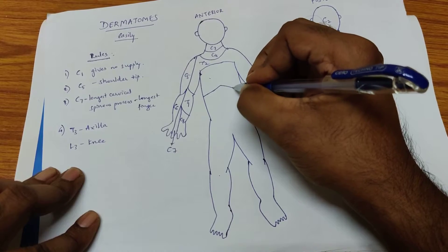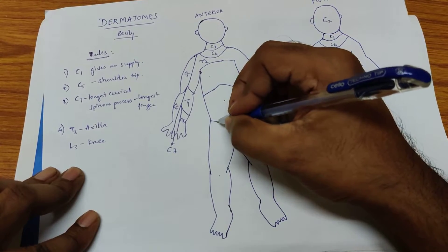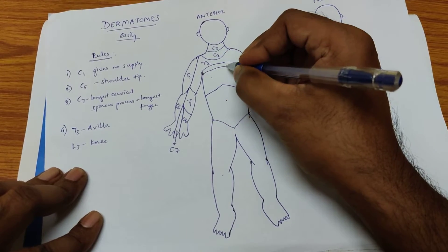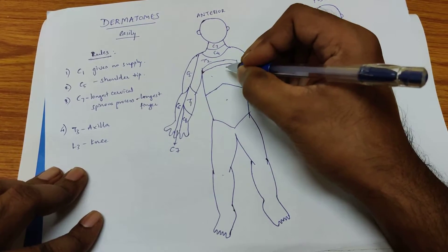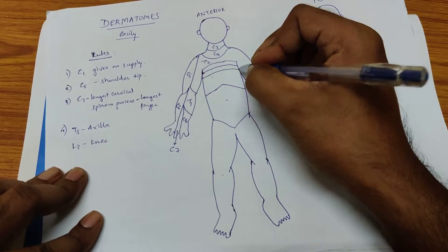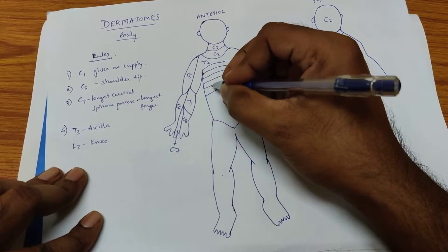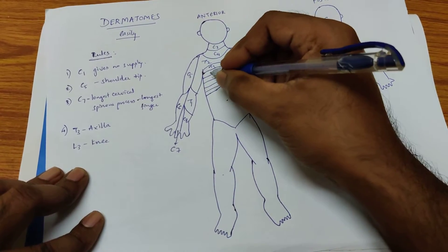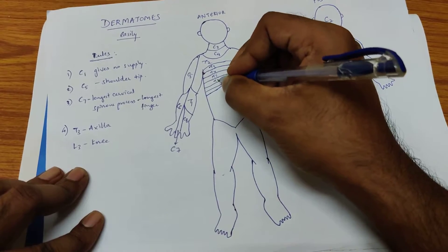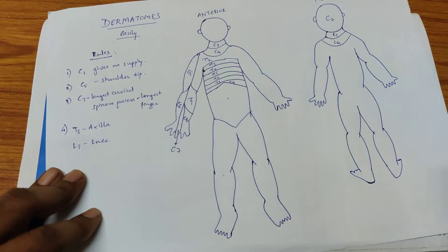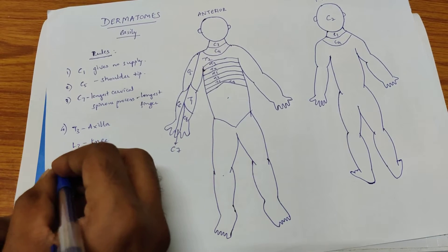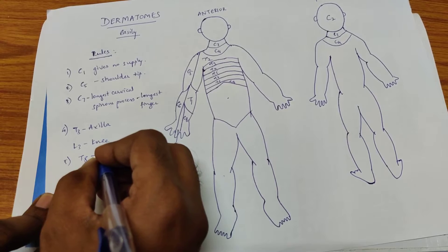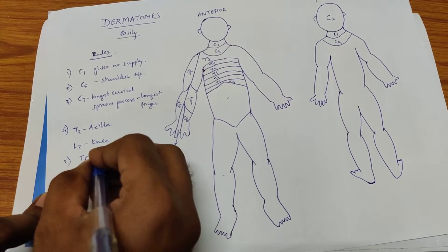Then from T3 onwards we go through T4, T5, T6, T7, and T8. The next rule is T8 supplies the subcostal area, that is the lower ribs.